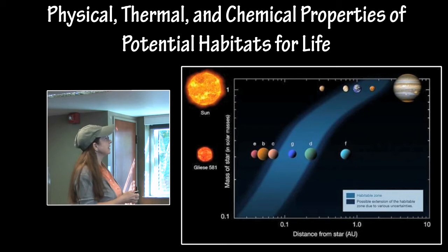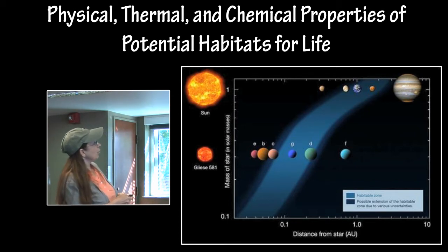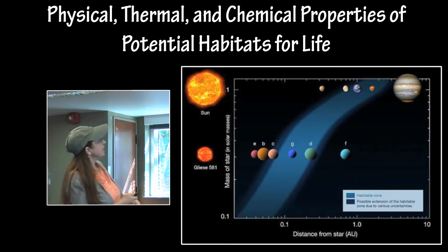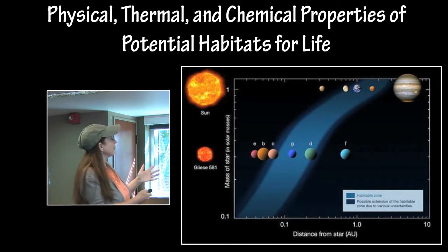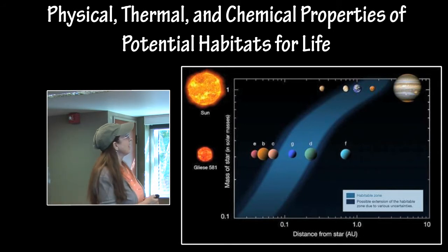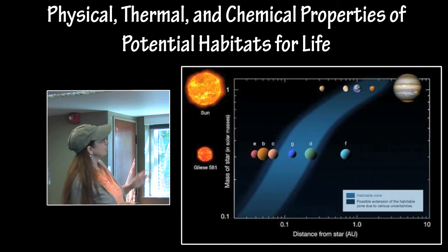For instance, one of the extraterrestrial planets, Gliese 581g, is of great interest because it is roughly Earth-sized and is right smack dab in the middle of the habitable zone for Gliese 581. As Earth is in the habitable zone, as is Mars, and Venus is sort of half in and half out.